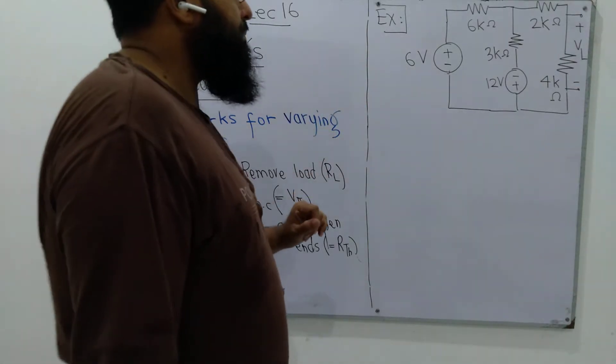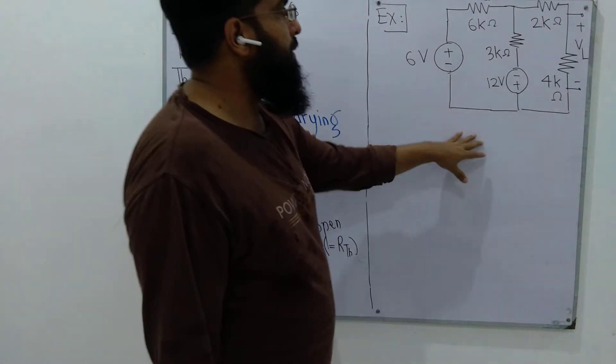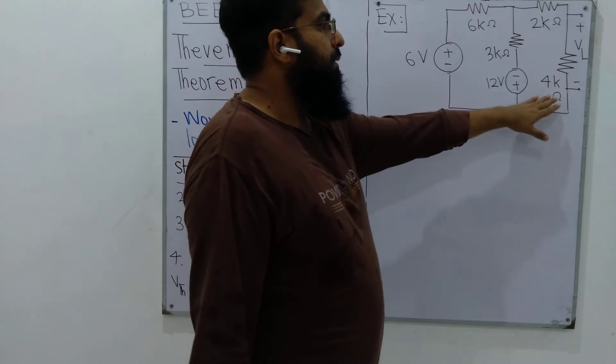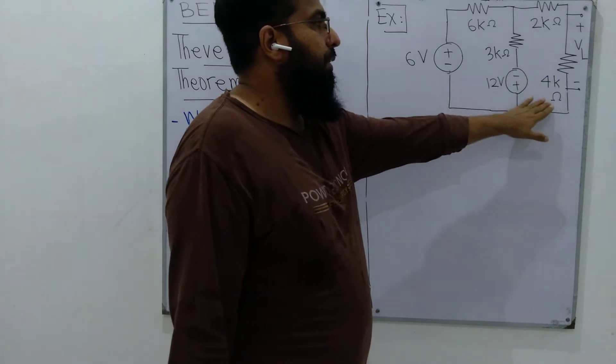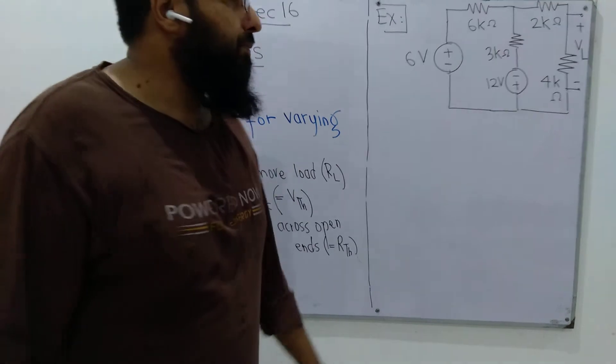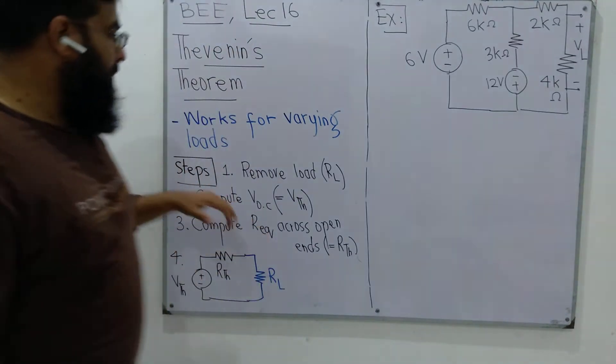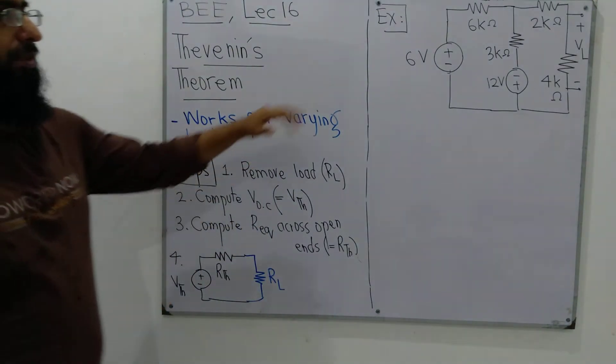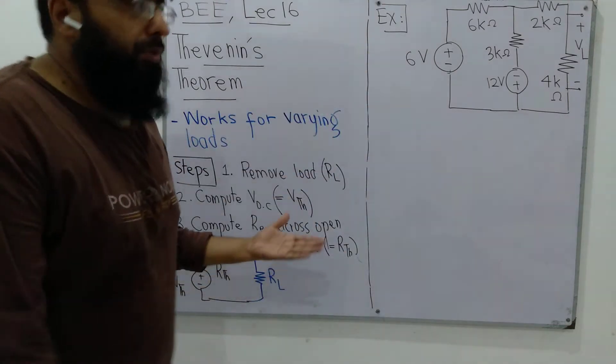Here is an example where we have two sources and a number of resistors. This is our load resistor 4kΩ across which we have to find the voltage. We will apply these four steps on the circuit to find the unknown quantity VL.